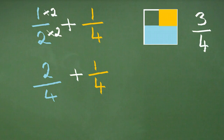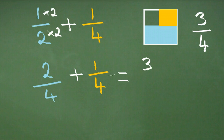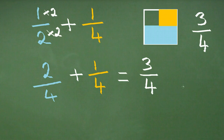We can see now that both denominators are the same — we have four on both parts of our calculation. It becomes quite straightforward: we simply add the top parts to give us three, and we always keep the denominator the same, so we keep the four. We get our answer of three quarters, which is the same as when we did it visually. So one half plus one quarter gives us three quarters.